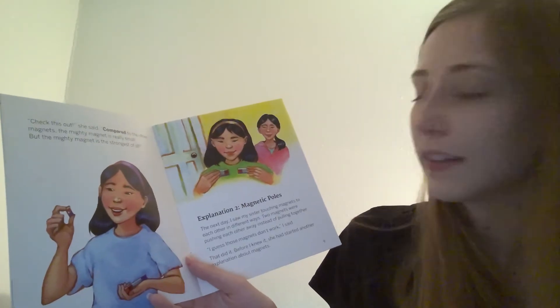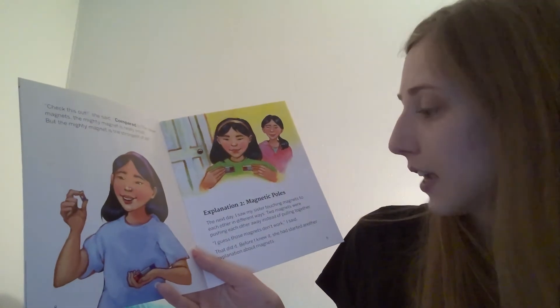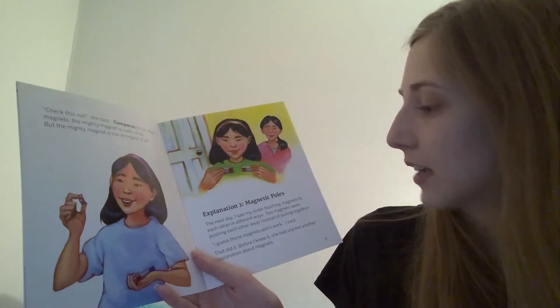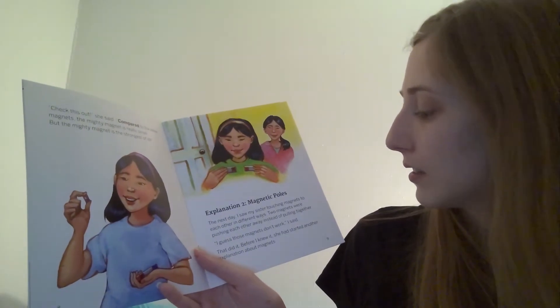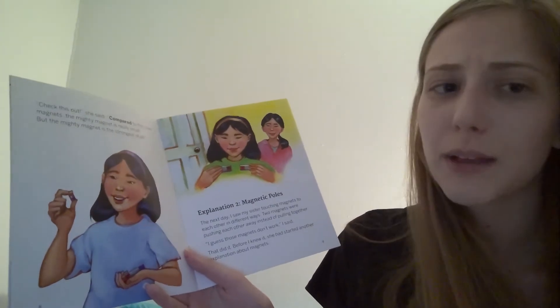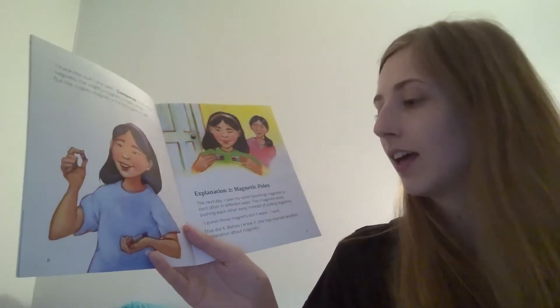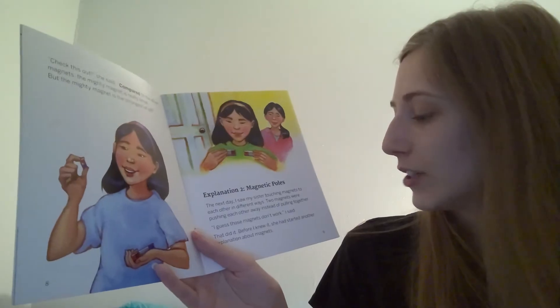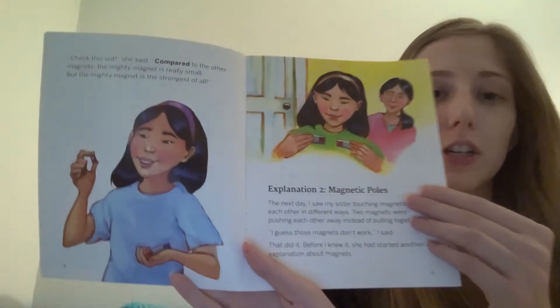Explanation 2. Magnetic Poles. The next day, I saw my sister touching magnets to each other in different ways. Two magnets were pushing each other away instead of pulling together. I guess those magnets don't work, I said. That did it. Before I knew it, she had started another explanation about magnets.